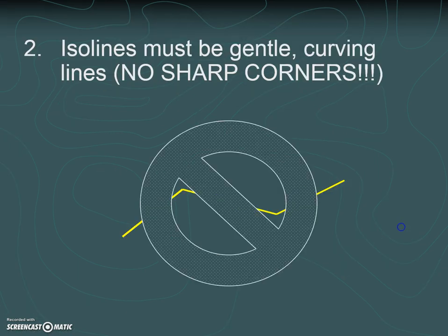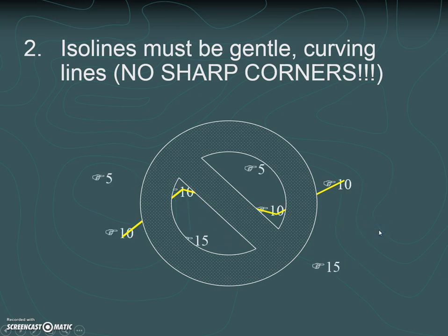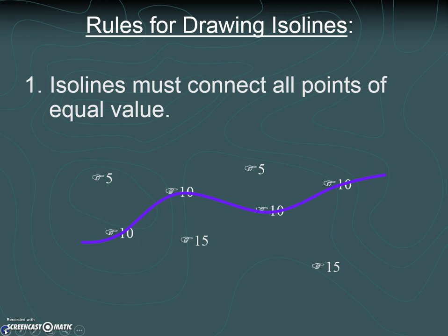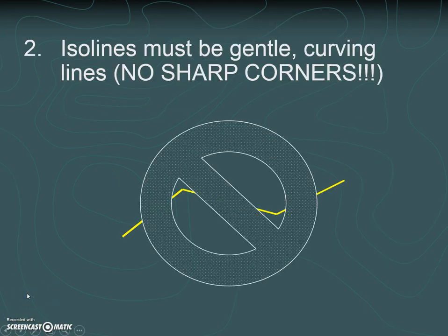The second rule is that your iso lines have to be gentle, curving lines. We don't want straight lines and we don't want sharp corners — that's no good. The reason is that if you're looking at temperature or something similar, the values in an area are not going to change so drastically that you'd have a sharp angle or sharp corner between one place and the place next to it. So we want smooth, curving lines.